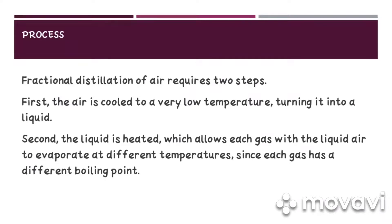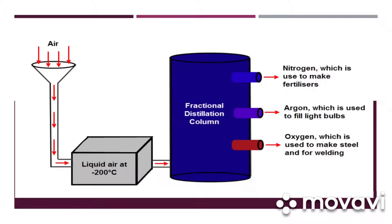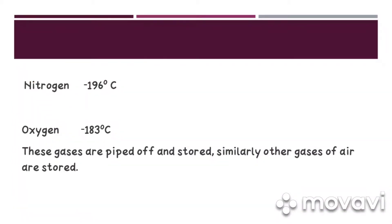In the second step, the liquid air is heated so each gas of air would be evaporated according to its boiling point and stored in a separate chamber. You can easily see in this diagram that air is cooled and compressed to form liquid air. Then the liquid air at minus 200 degrees Celsius is heated so gases according to their boiling points got separated. For example, at minus 196 degrees Celsius, nitrogen is separated and collected. At minus 183 degrees Celsius, oxygen is collected and further stored. Argon has a boiling point very near to that of oxygen. The boiling point of nitrogen is minus 196 degrees Celsius and boiling point of oxygen is minus 183 degrees Celsius.